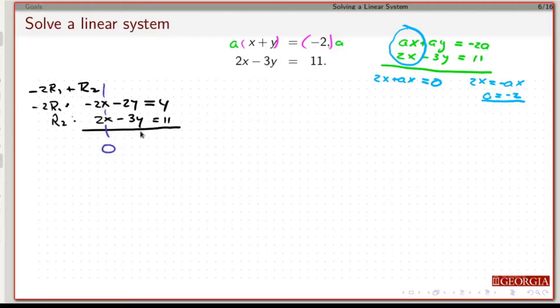Now notice, that's going to be zero by design. This is going to be minus 5y, so minus 2y minus 3y. 4 plus 11 is 15. So my y is minus 3.